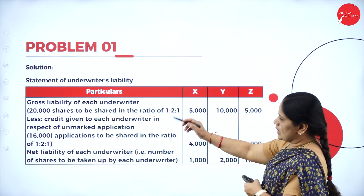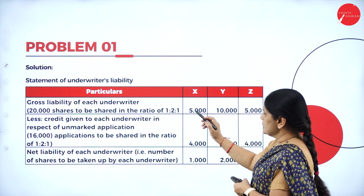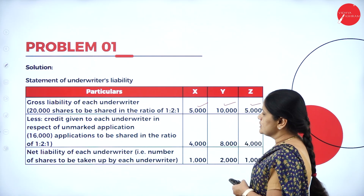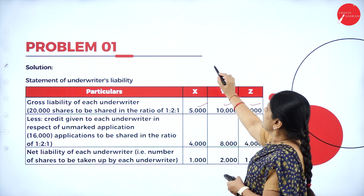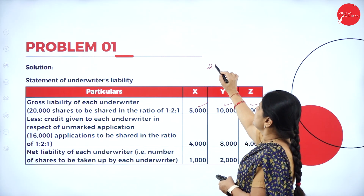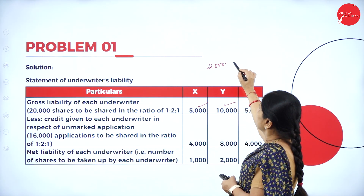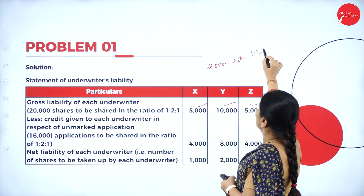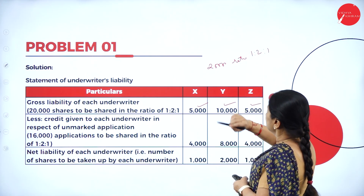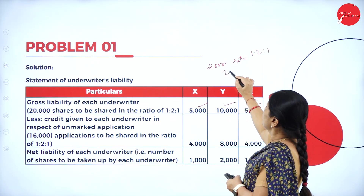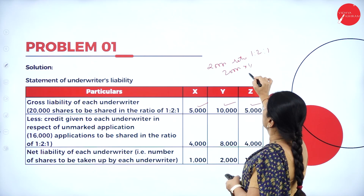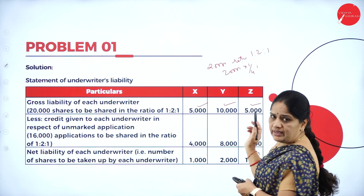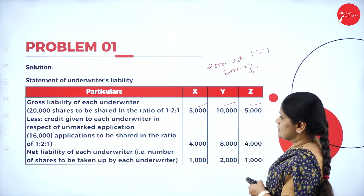The gross liability of each underwriter is 5,000, 10,000 and 5,000. So 20,000 shares has been divided in the ratio of 1 is to 2 is to 1. So it will be 20,000 into 1 by 4, that is 5,000, 10,000 and 5,000.